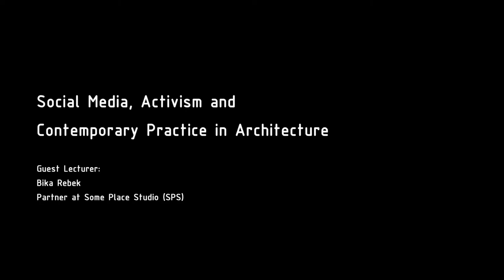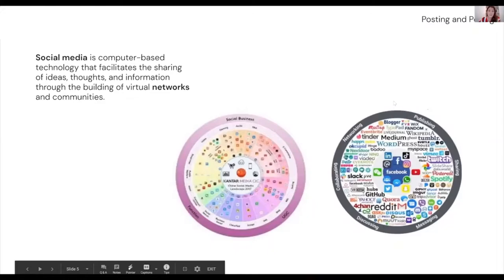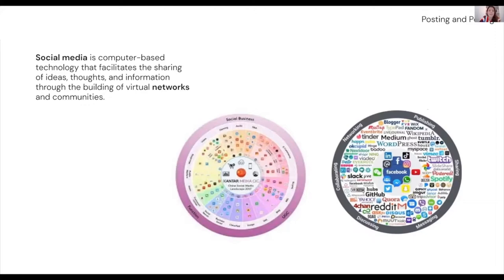What is social media? There are lots of definitions, but essentially social media is a computer-based technology that facilitates the sharing of ideas, thoughts, and information through the building of virtual networks and communities. There are lots of different subcategories. Here you can see a Western grouping of social media types, heavily dominated by Facebook. There's also a Chinese version showing a totally different group of platforms that fulfill very similar functions.